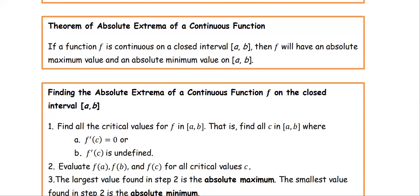The theorem of absolute extrema of a continuous function: if the function f is continuous on a closed interval [a, b], then f will have an absolute maximum value and an absolute minimum value on the closed interval [a, b].